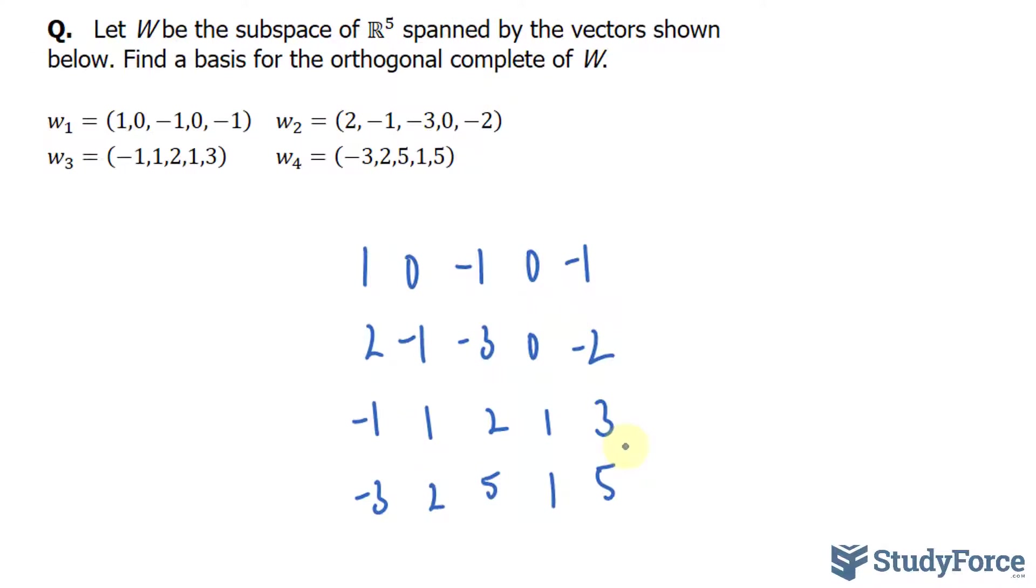Also, since we're finding the basis, we need to set each of these rows equal to 0. So, let's go ahead and find the row reduced echelon form.